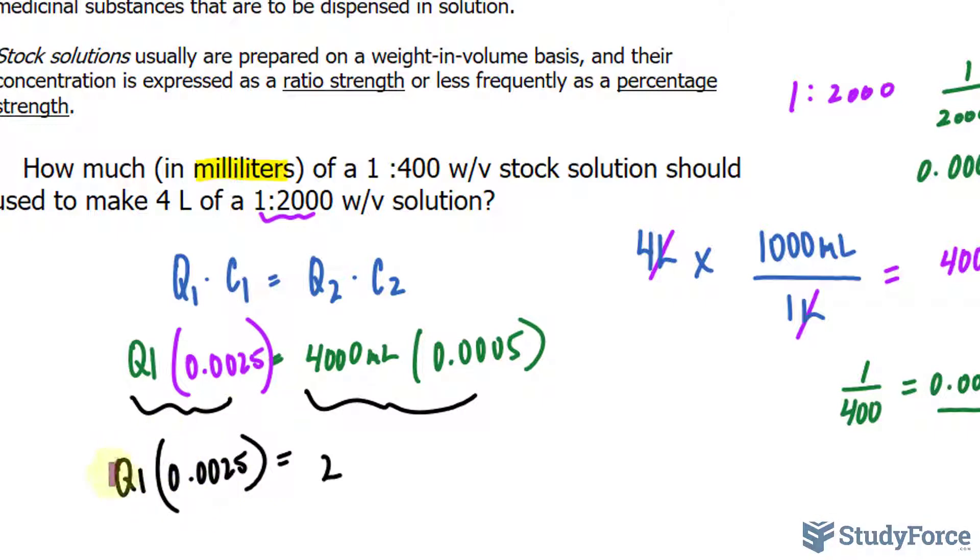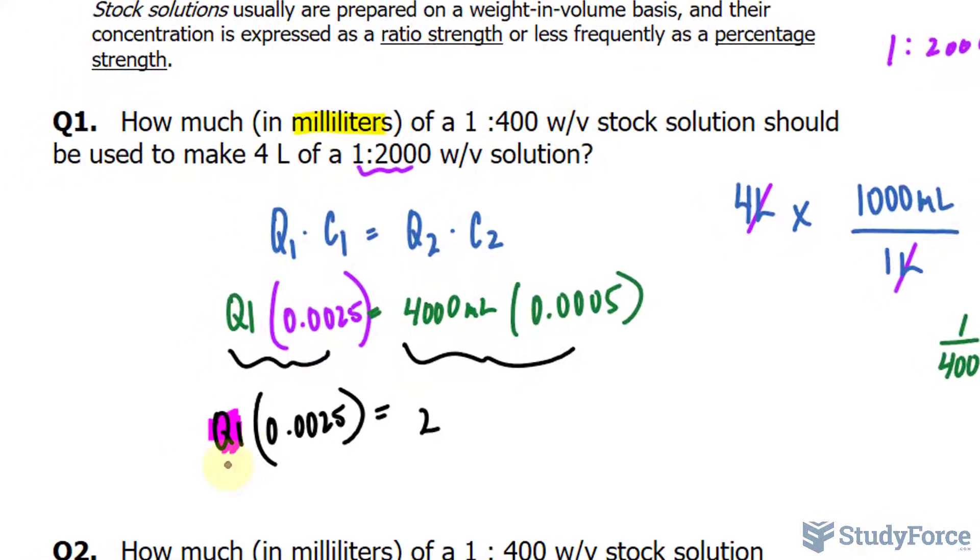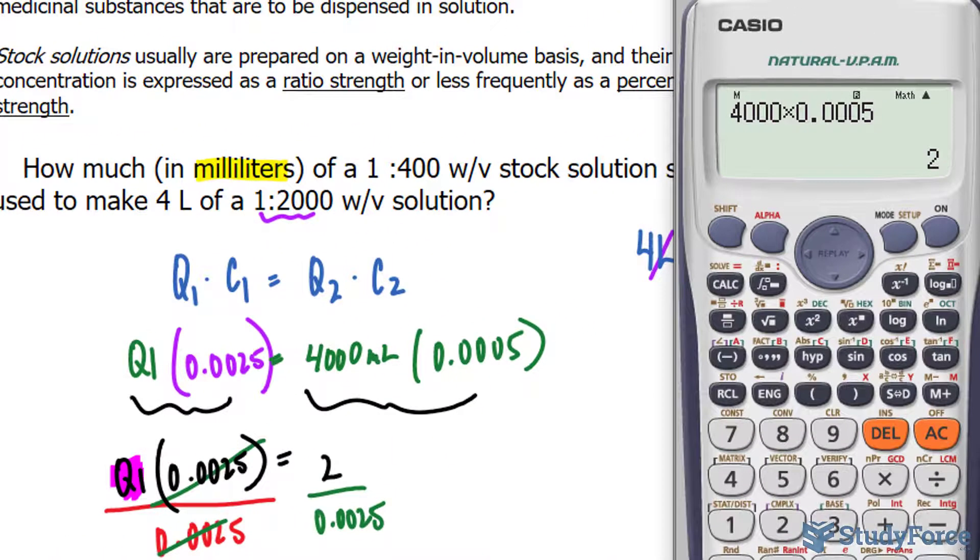Then, to isolate for Q1, we divide both sides of the equation by 0.0025, whatever this is being multiplied to. This will cancel out these two factors.